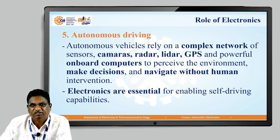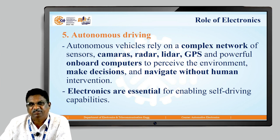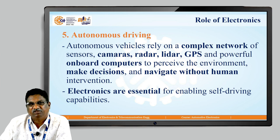The fifth area is autonomous driving. Autonomous driving relies on a complex network of sensors, cameras, radar, lidar, GPS and powerful onboard computers to perceive the environment, make decisions and navigate without human intervention. Electronics are essential for enabling self-driving capabilities.